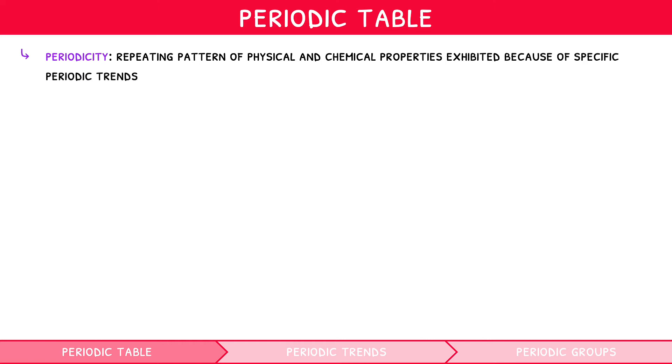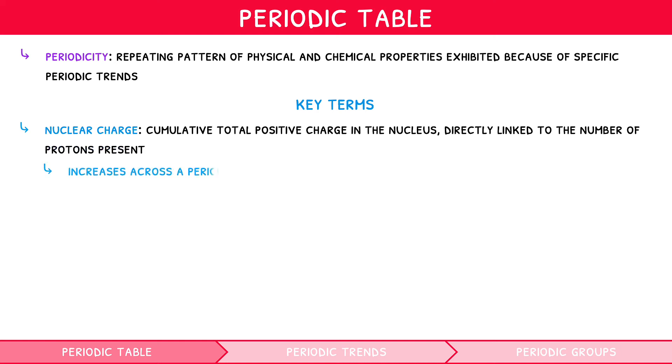To understand these fully, we first need to explore three key terms. Nuclear charge – this is the cumulative total positive charge in the nucleus, directly linked to the number of protons present. It increases across a period and down a group.